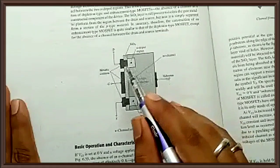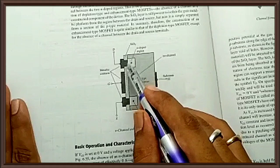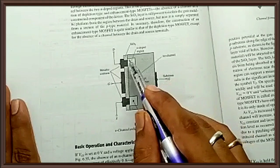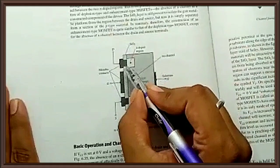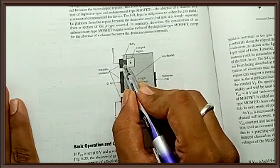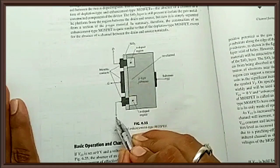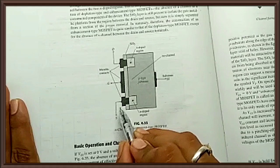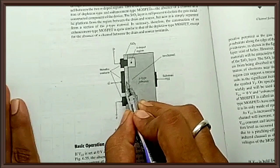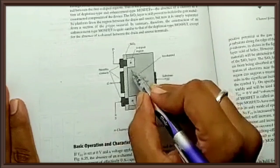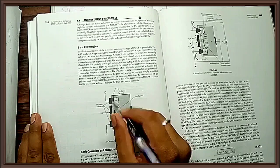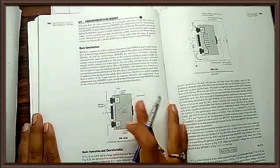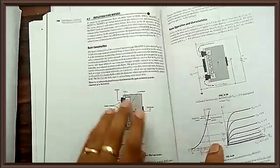This is the construction of the enhancement type MOSFET. A slab of P-type substrate is formed on a silicon base on which the device is constructed. The upper N region is connected to the drain via metallic contact, the lower N region is connected to the source via metallic contact, and the gate is connected via metallic contact to the silicon dioxide layer. As you can see, the channel is absent, hence it is called enhancement type MOSFET. If there were a channel present, it would be called a depletion type MOSFET.